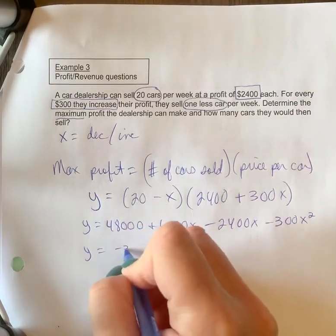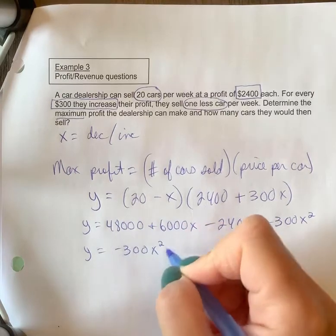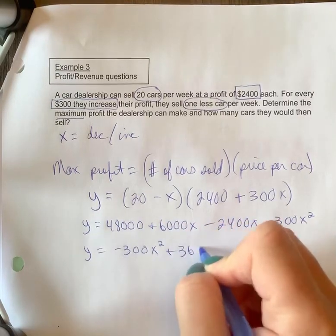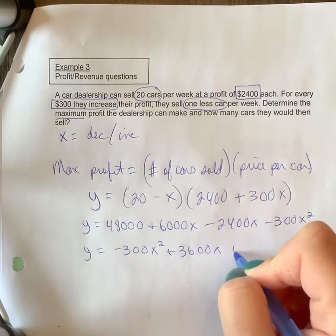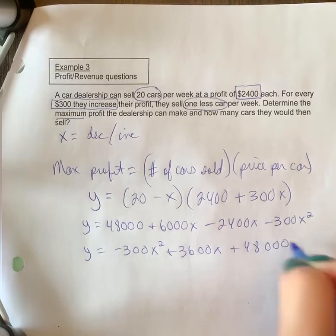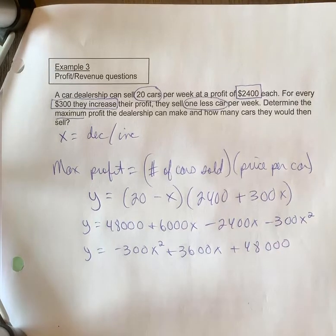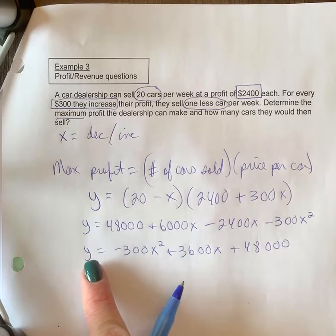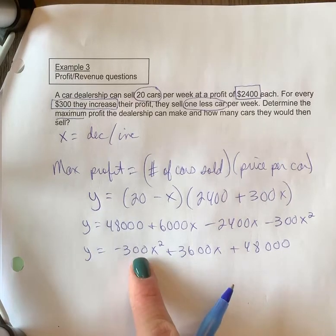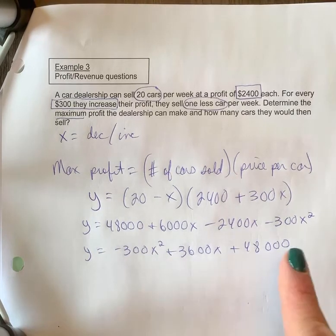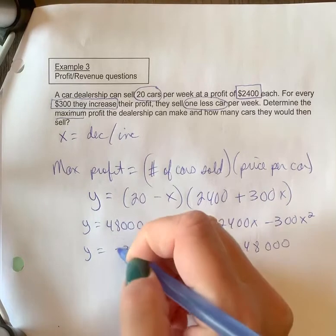but I'm going to keep it in descending order, so it's going to go x squared first. All right, so in case you were doing that on your own, I didn't sort of talk out loud there. But now that you've got that, y equals negative 300x squared plus 3,600x plus 48,000, let's complete the square.